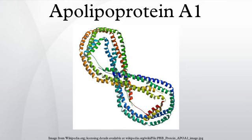Apolipoprotein A1 is a protein that in humans is encoded by the APOA1 gene. It has a specific role in lipid metabolism. Recent reports suggest that APOA1 mRNA is regulated by endogenously expressed antisense RNA structure.